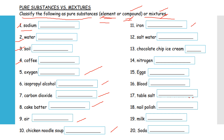Twelve: salt water. Thirteen: chocolate chip ice cream. Number fourteen: nitrogen. Fifteen: eggs. Sixteen: blood. Seventeen: table salt. Eighteen: nail polish. Nineteen: milk. Twenty: soda. Remember, class.